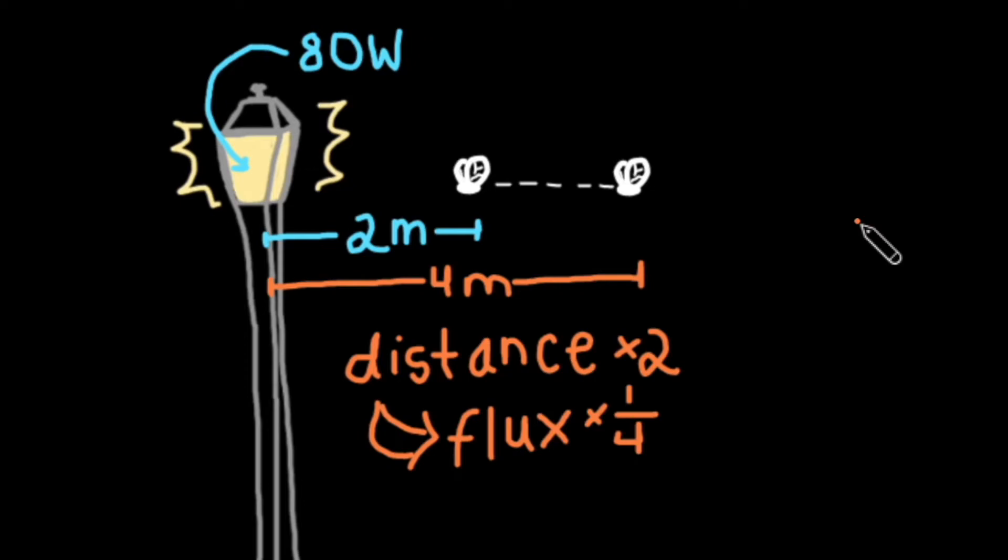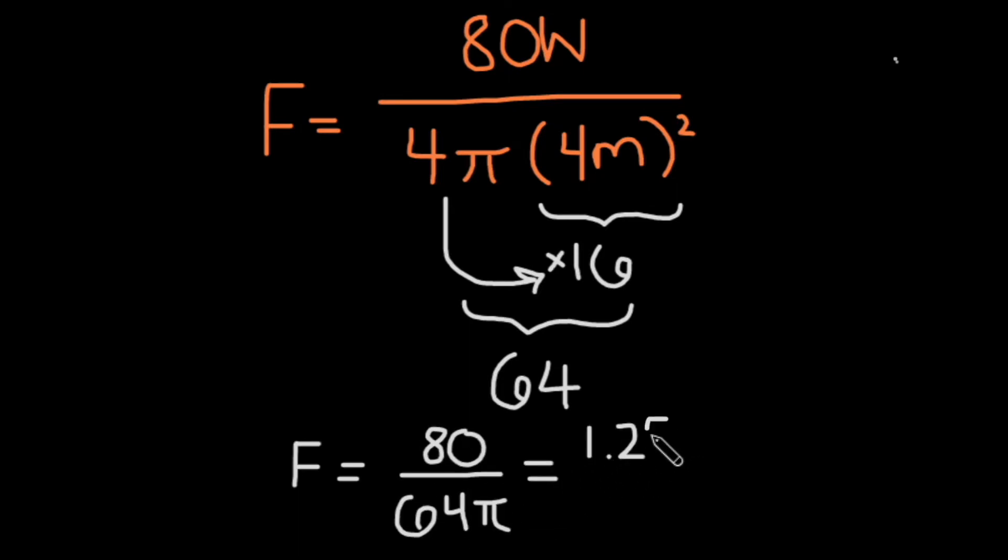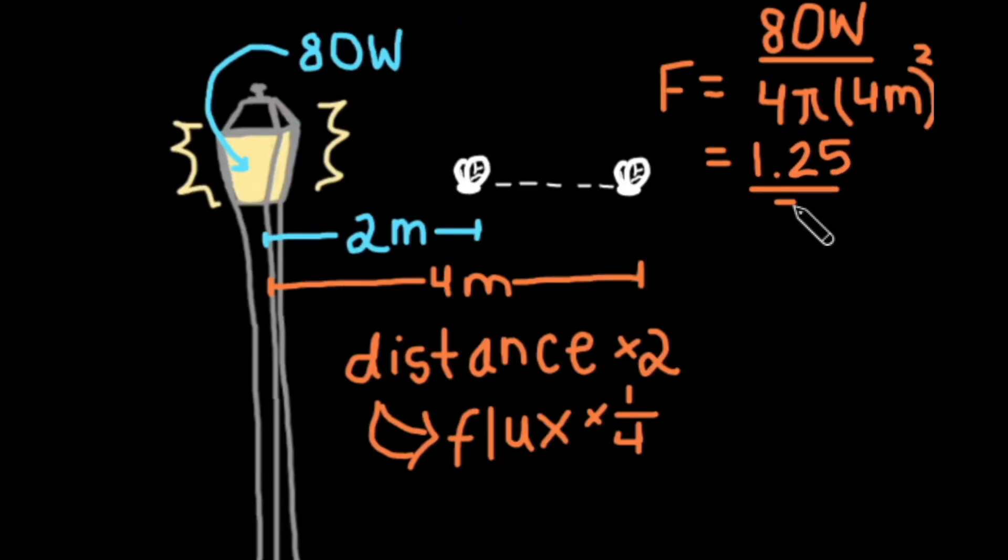We can prove this by plugging in the numbers. At twice its original distance from the streetlight, the fly will be 4 meters away from an 80 watt power source, so it will experience a flux of 80 watts divided by 4 times pi times 4 meters squared. 4 squared is 16, and 16 times 4 is 64, so it will experience a flux of 1.25 divided by pi watts per square meter, which is 4 times less than the original flux the fly experienced.